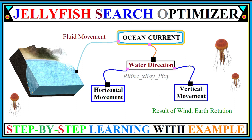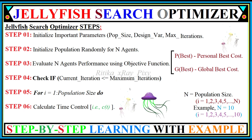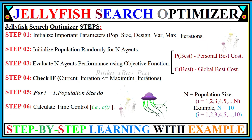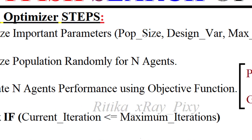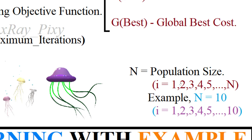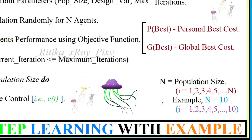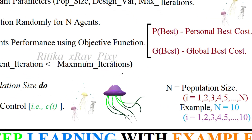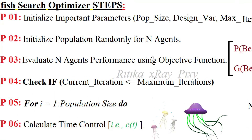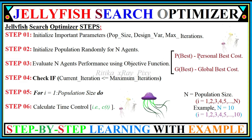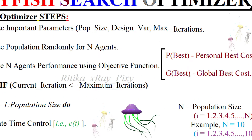The algorithm steps are inspired by jellyfish behavior. First, we initialize the important parameters: population size, design variables, and maximum number of iterations. Population size means the total number of agents — for example, a population size of 10 means 10 jellyfish. After that we initialize the population in the search space, then using the objective function we evaluate the performance for each jellyfish, sort the population, and find the best — the minimum value — as the global best.